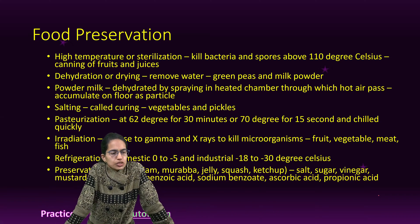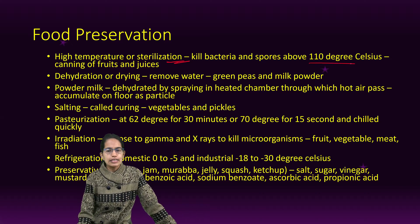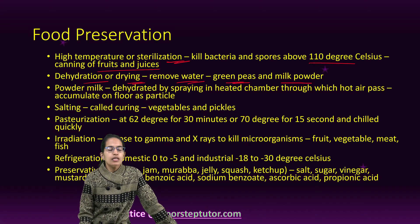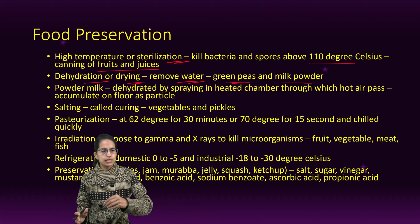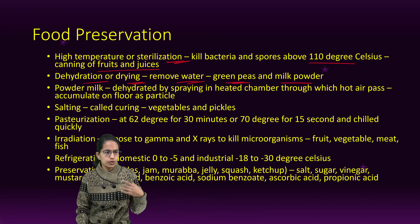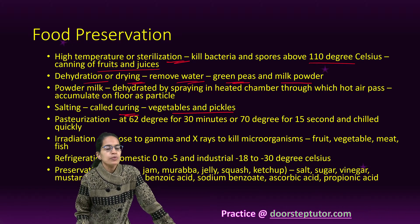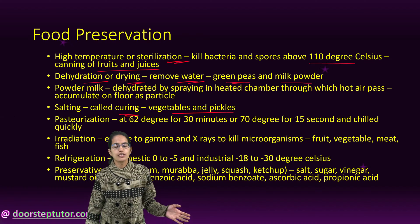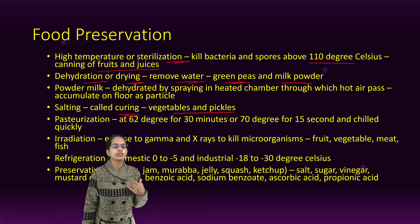Food preservation can take place in various ways. By high temperature, we can sterilize — bacteria and spores get killed at about 110 degrees Celsius, and this is how canning of fruits and juices is done. Dehydration or drying removes water, as in milk powder and green peas. Salting is also known as curing — preparation of pickles and vegetables is done by it. Pasteurization of milk to make it bacteria-free is done by two methods: one at 62 degrees for 30 minutes, the other at 70 degrees for 15 seconds, then chilled quickly.